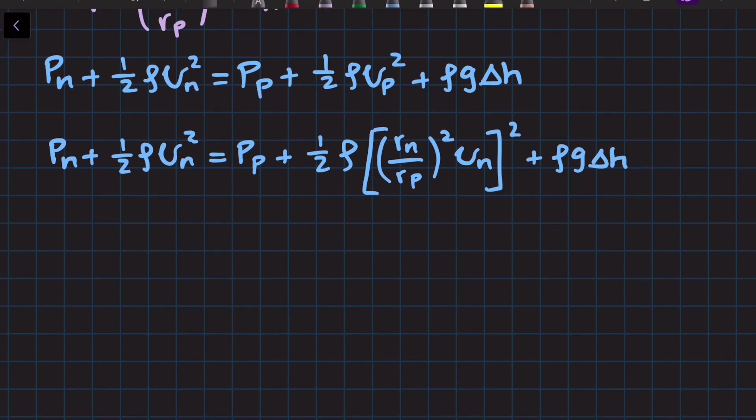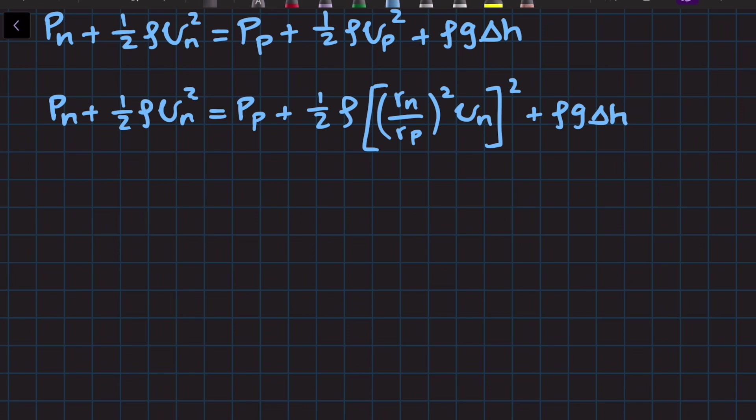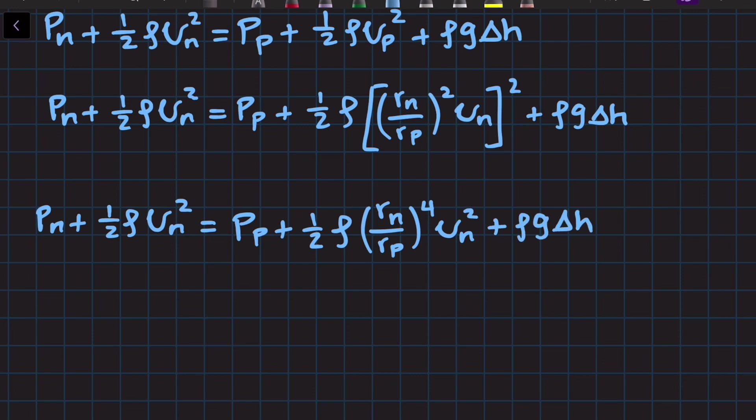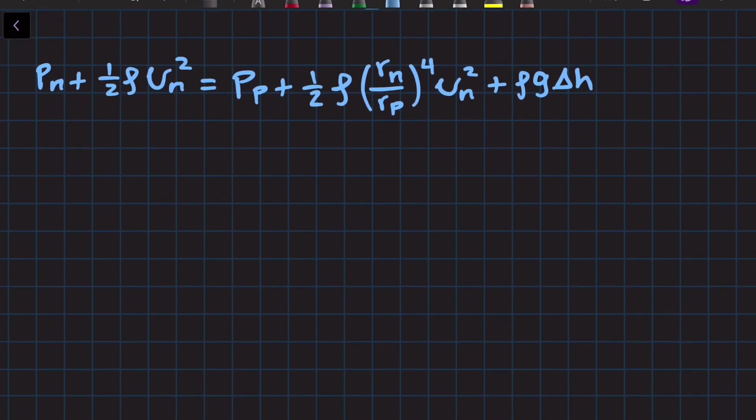So now we'll distribute the square to get rid of the brackets. So the ratio between the radii went from a square to a power of 4, by the laws of exponents. And now we can rearrange this equation so that we have all the expressions with velocity nozzle on the same side. So although I could move whichever one to whatever side I want, I'm going to move this expression, because that's one thing, that's one expression, to the left side.